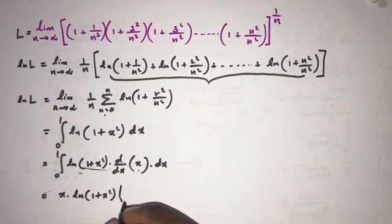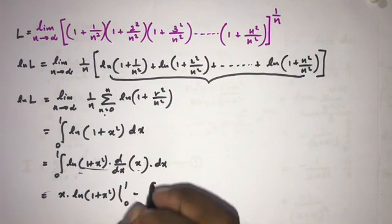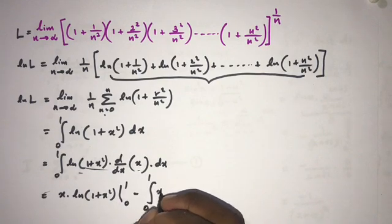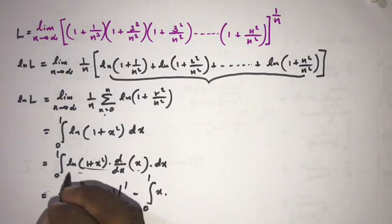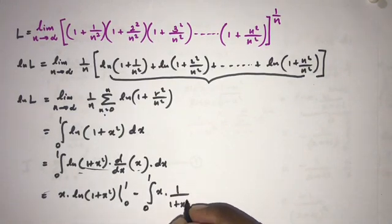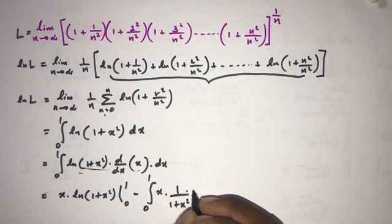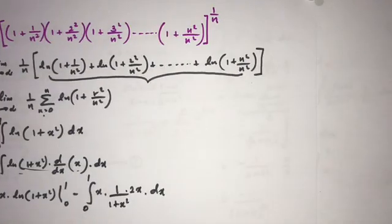Applying integration by parts, we get x · natural log(1 + x²) evaluated from 0 to 1, minus the integral from 0 to 1 of x times the derivative of natural log(1 + x²), which is (1/(1 + x²)) · 2x dx.